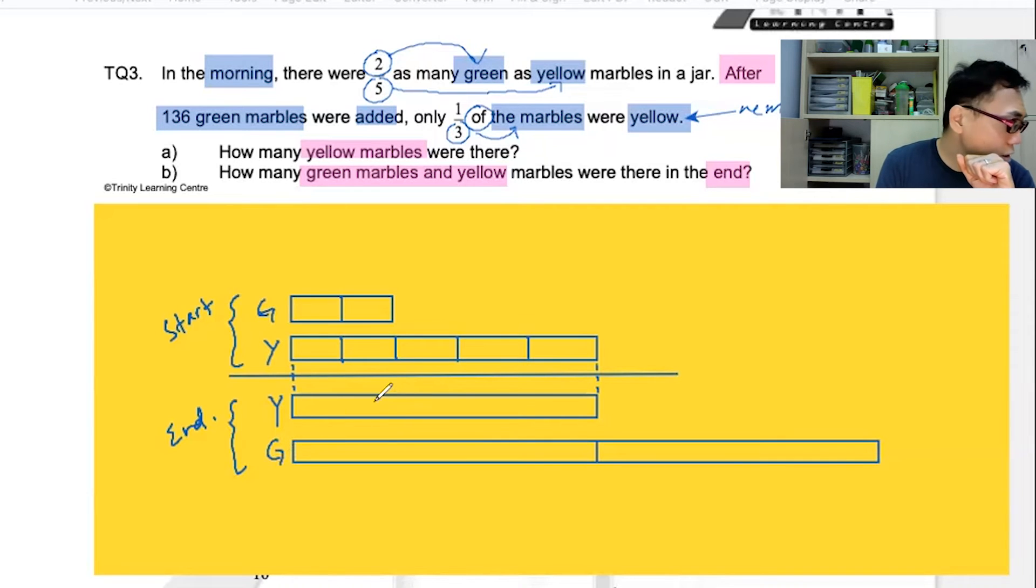As you can see, the green marbles went from here and is now here. This is five units. One, two, three, four, five.